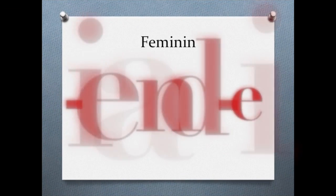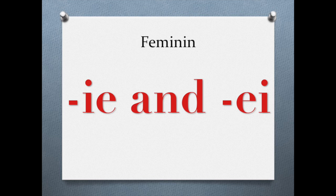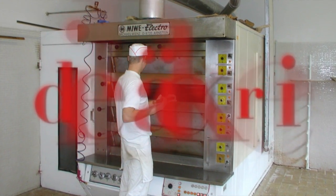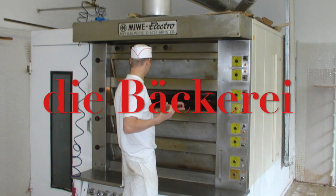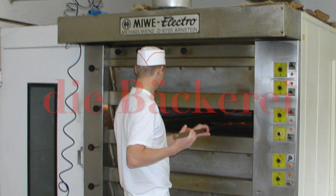The first two examples are the -IE and the -EI endings. The -IE ending we have, for example, in the German word for chemistry, which is 'Chemie', and the -EI ending, for example, in 'die Bäckerei'.